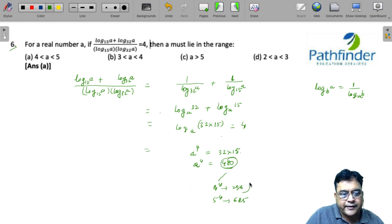So, 480 lies between these two numbers. 480 must lie between 4 to the power of 4 and 5 to the power of 4. So, a must lie between 4 and 5, which is your answer.